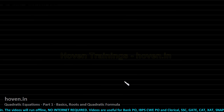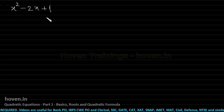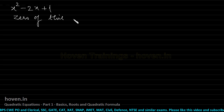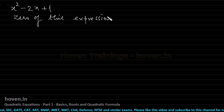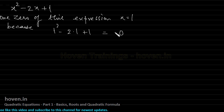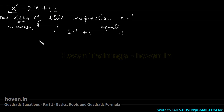Take another example. Consider the quadratic expression x² − 2x + 1. This is a quadratic expression because there is no equal-to sign. One zero of this quadratic expression is x = 1, because 1² − 2(1) + 1 = 0.